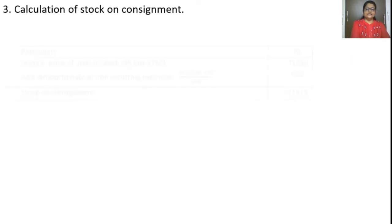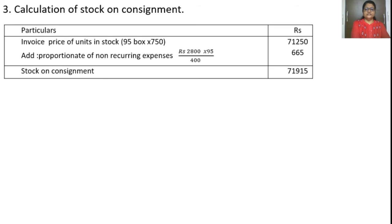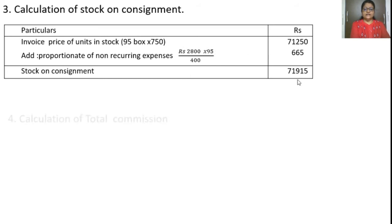Calculation of stock on consignment: let us see how much is in the closing stock. 95 boxes are remaining, and you have to show it at invoice price. Invoice price: 95 boxes at Rs. 750 = Rs. 71,250. Proportionate expenses for 95 boxes is Rs. 665. So stock on consignment total comes to Rs. 71,915.